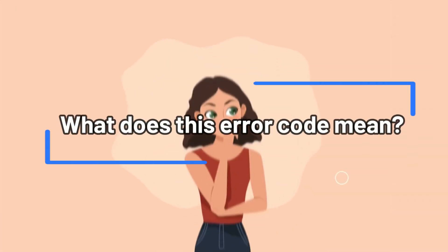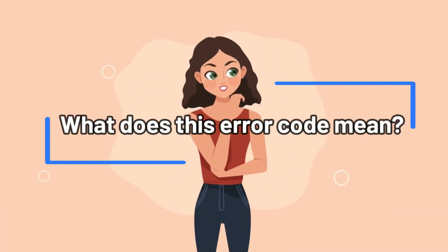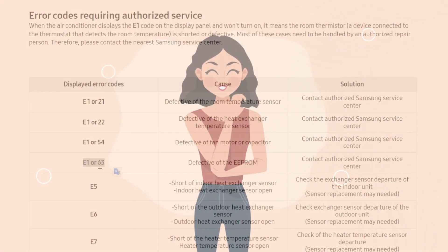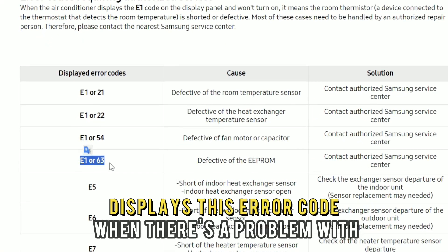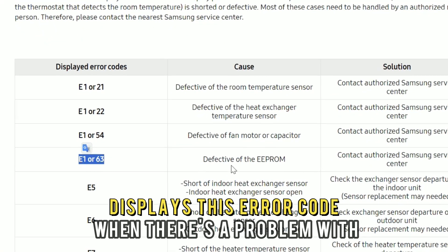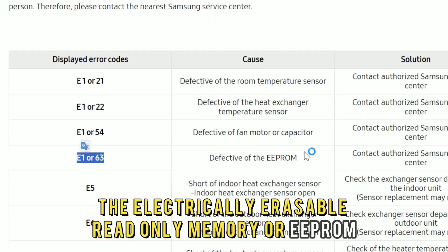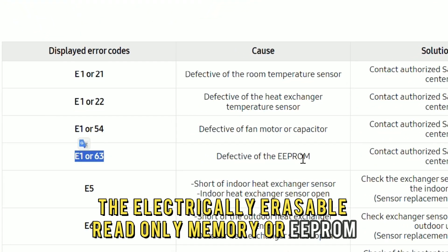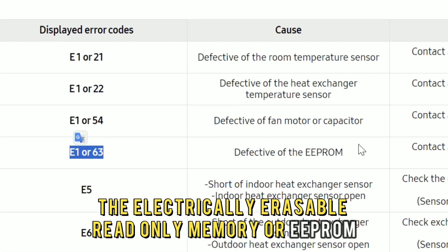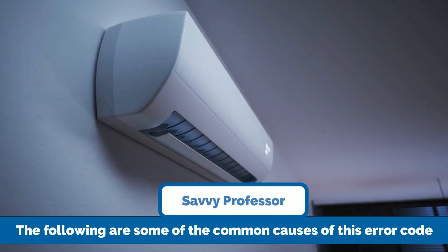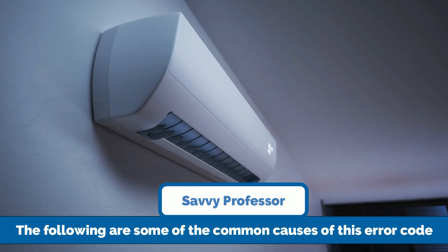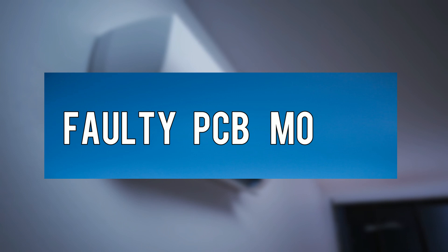But first, what does this error code mean? Your Samsung Inverter AC displays this error code when there's a problem with the electrically erasable read-only memory, or EEPROM. The following are some of the common causes of this error code.